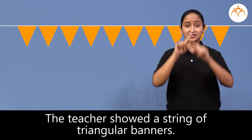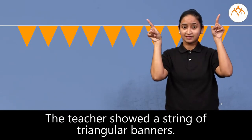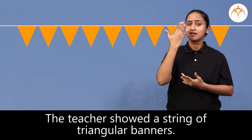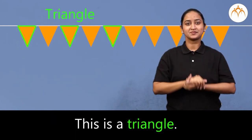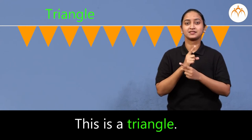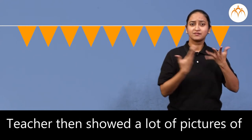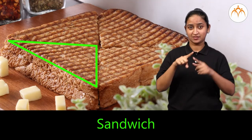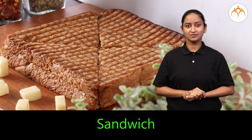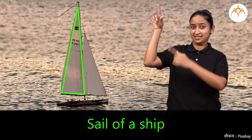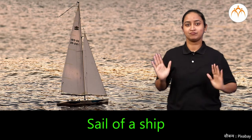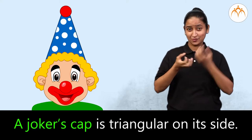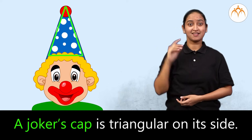The teacher showed a string of triangular banners. This is a triangle. Teacher then showed a lot of pictures of samosa, sandwich, sail of a ship and mountain. A joker's cap is triangular on its side.